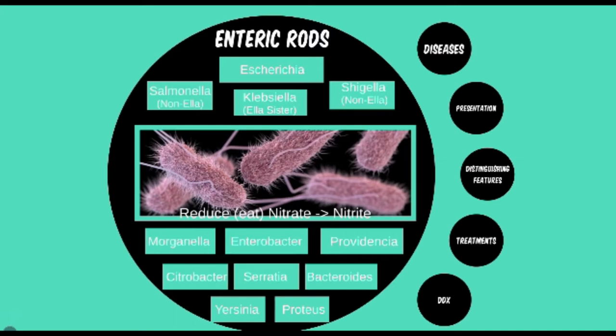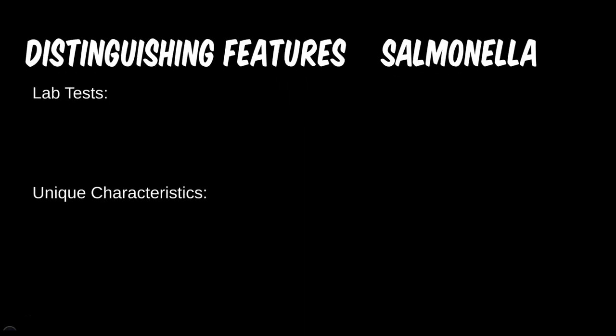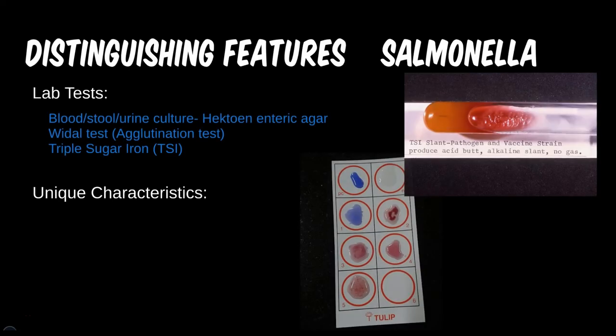Let's start with Salmonella. It can be tested for in a variety of manners, including many types of body fluids. The Widal test, or agglutination test, was a classic question regarding this microbe and tests for antibodies or antigen. This causes clumping in a test tube, as seen in the image.